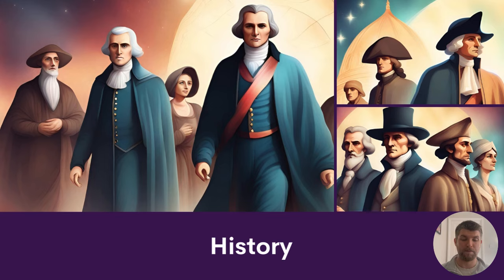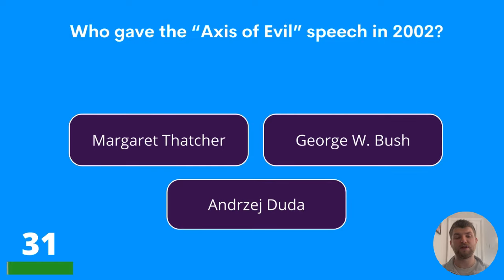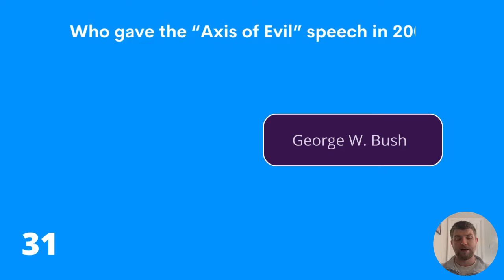Question thirty-one is going to be the first question in the history round. Who gave the Axis of Evil speech in 2002? Margaret Thatcher, George W. Bush, or Andrae Duda? Apologies on the mispronunciation there. The answer is George W. Bush.